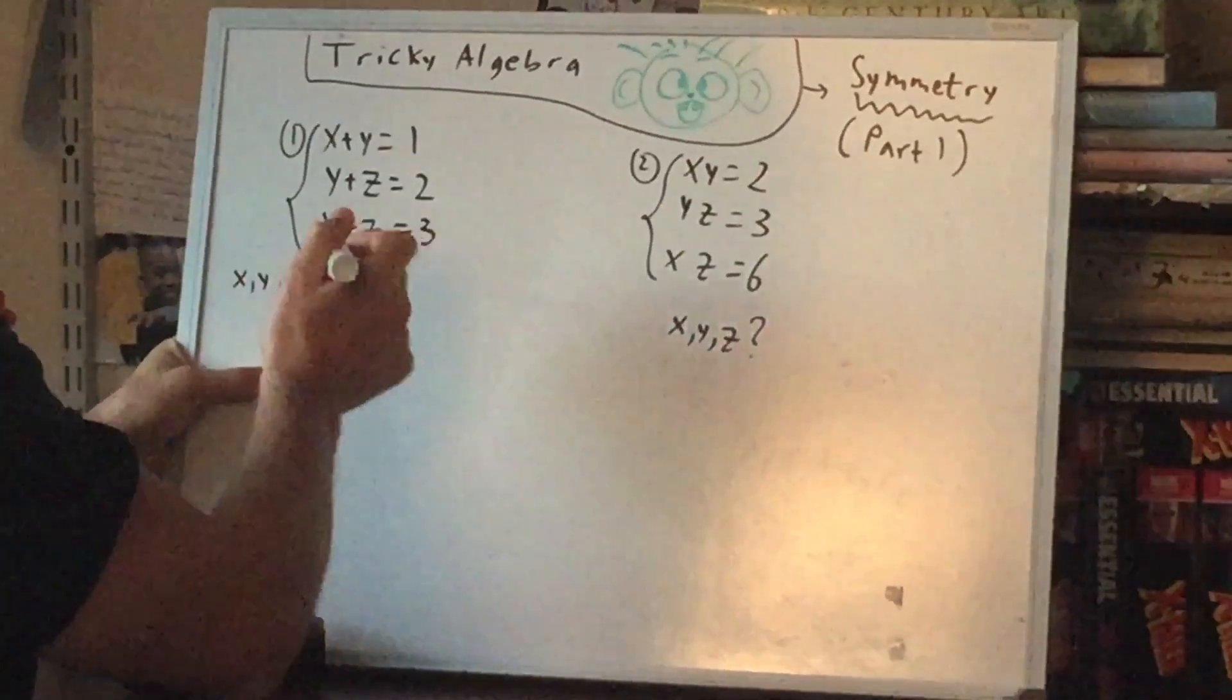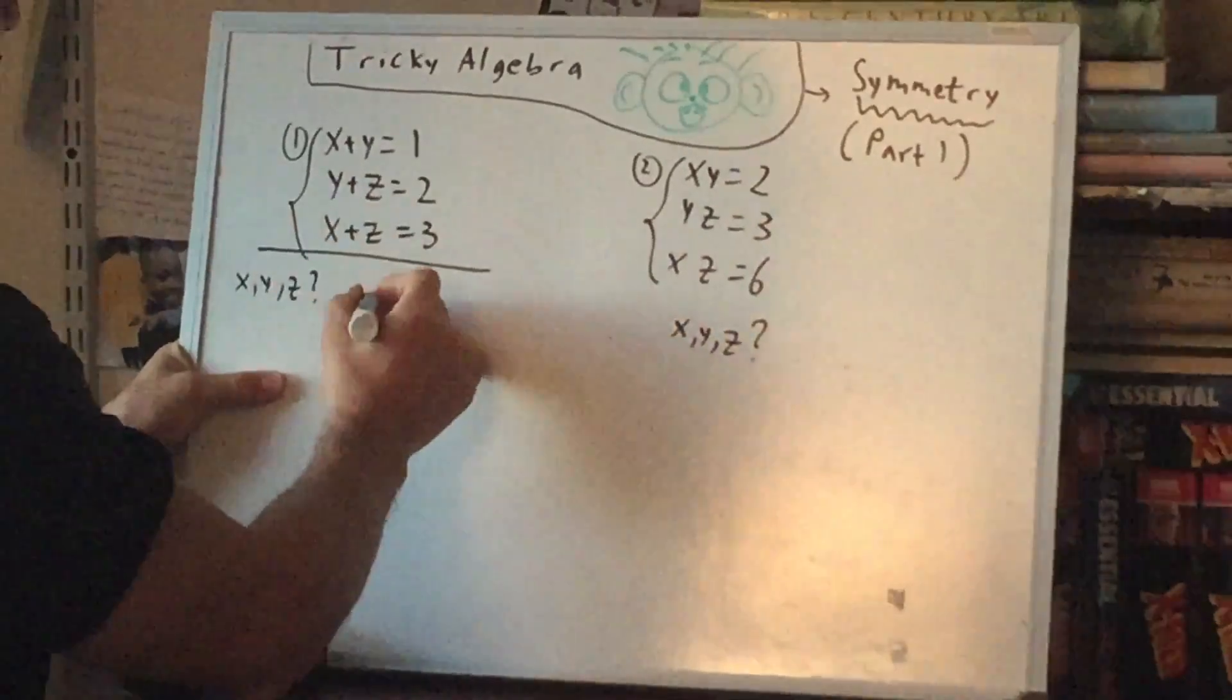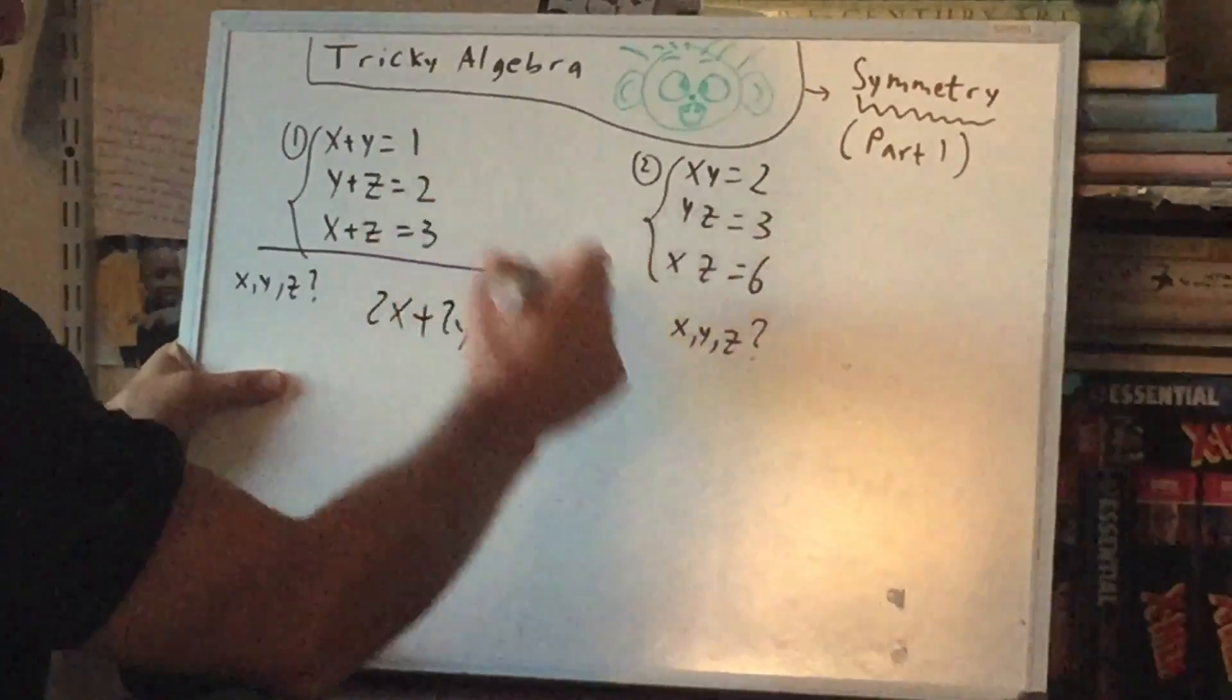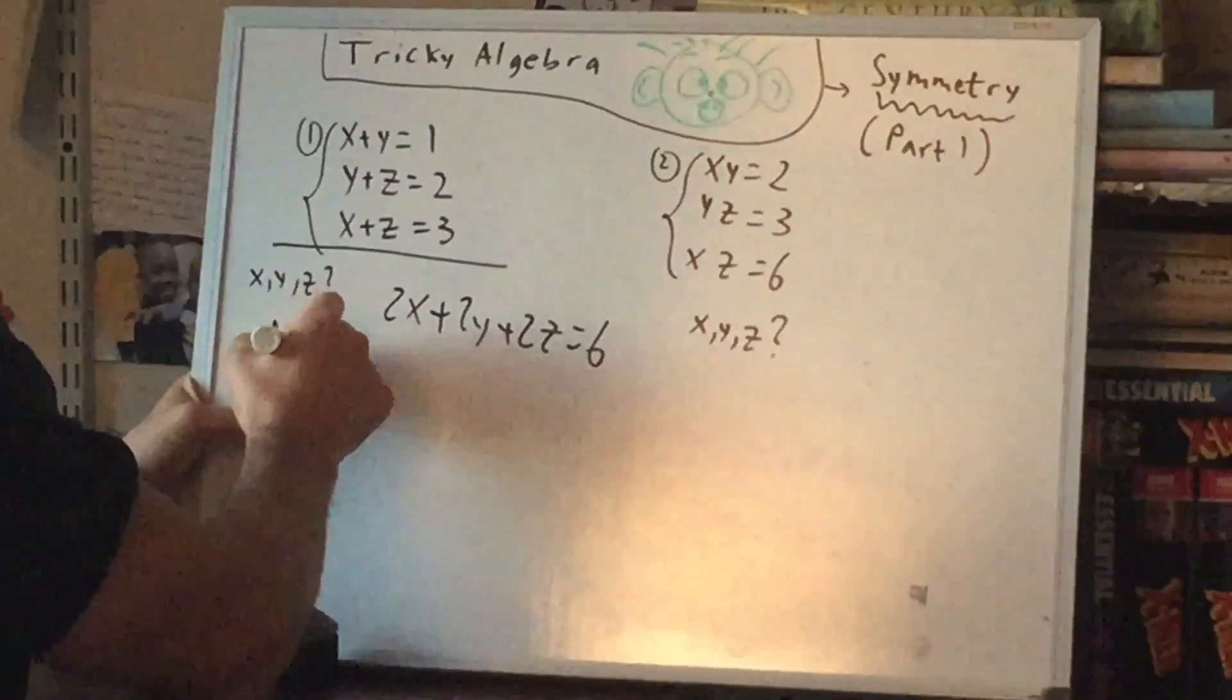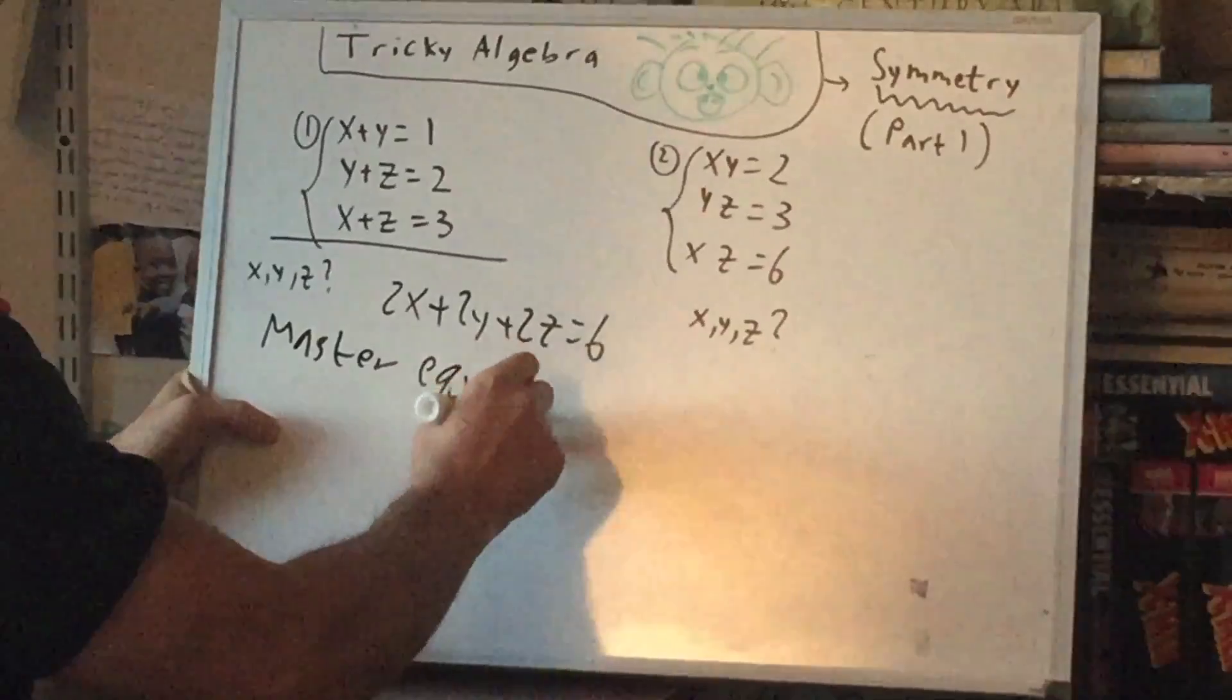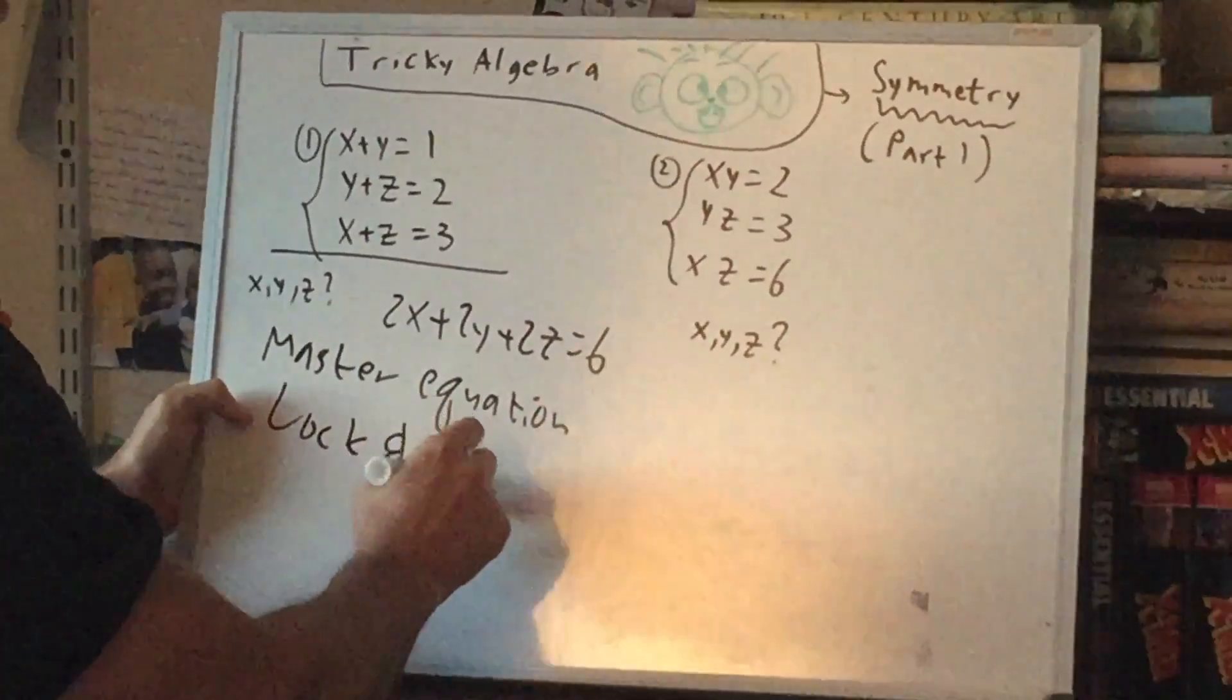That means if we were to add all of these equations, we would get 2x plus 2y plus 2z equals 6. So I think of this as sort of the master equation, or maybe kind of like a lock and key.